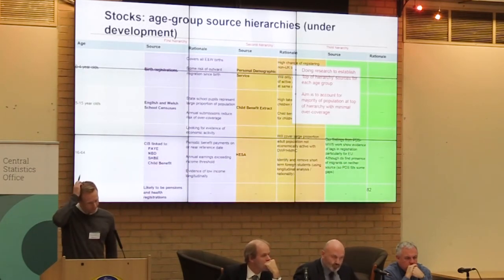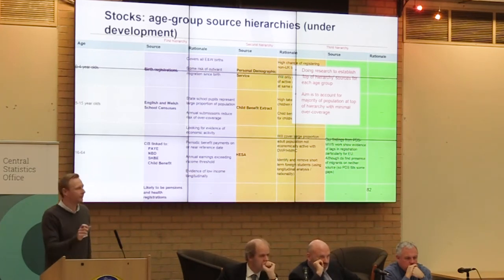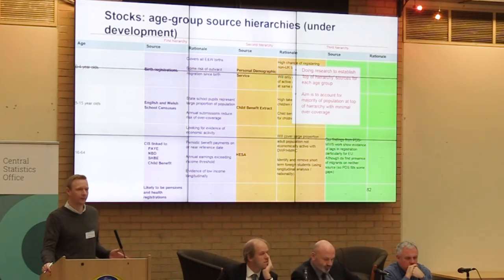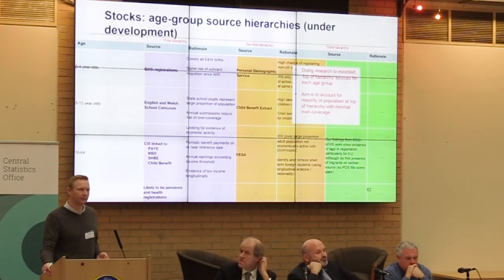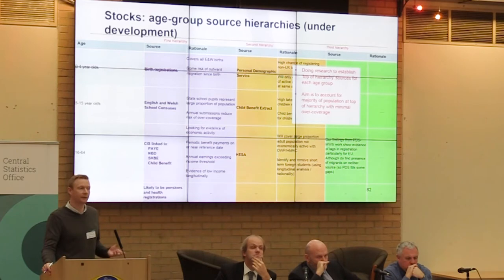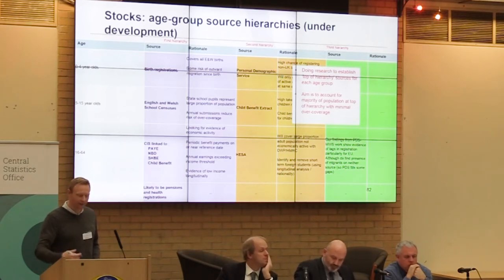We're trying to move away from that two-of-four rule now. Instead of saying 'if you appear on two sources you're in the population,' we're going to try and use the best information available for certain age groups. For nought-to-four-year-olds, for UK-born children we've got birth registrations, and for children of migrant families we'll look to health data. For school-age children we'll start with the school census and then look for child benefit payments to pick up missing children not in state schools. So we develop a hierarchy of which sources are most suitable for each age group.